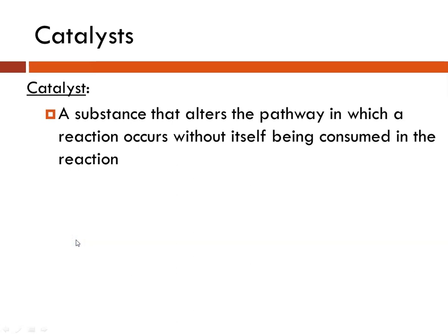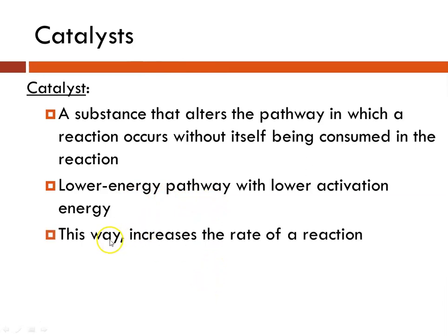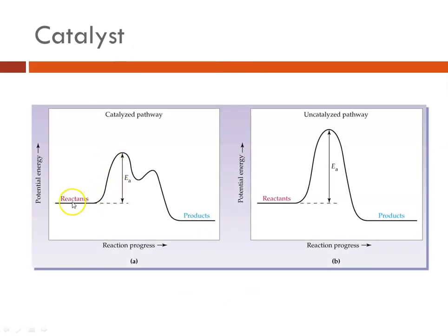Catalysts are substances that alter the pathway of a reaction without being consumed in it. They lower the activation energy, increasing the rate of the reaction because a greater fraction of reactants can achieve the new minimum energy. A catalyzed pathway has a lower activation energy than the uncatalyzed pathway — the pathway may look more like a mountain range with bumps, but the overall activation energy is significantly reduced.